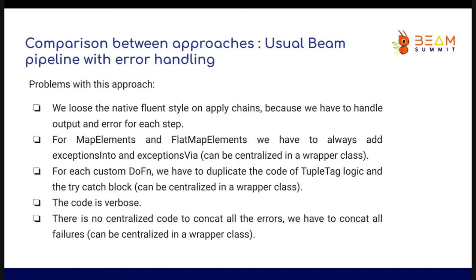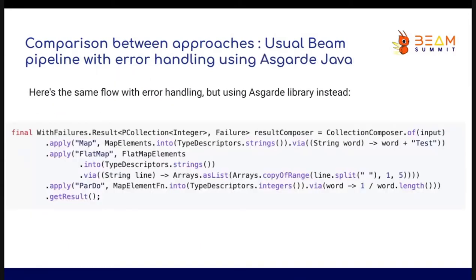Here you can see the same pipeline with the Asgard library. Asgard proposes a CollectionComposer class. We instantiate the CollectionComposer from an input PCollection and can chain all transformations with error handling. Asgard takes the native components proposed by Beam — MapElements, FlatMapElements, and PTransformer classes — and at the end the CollectionComposer returns a result that proposes the final output and all the failures for this pipeline.